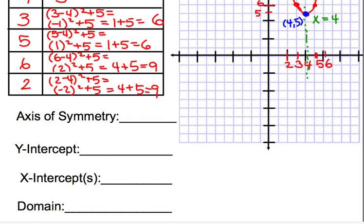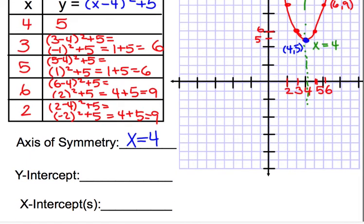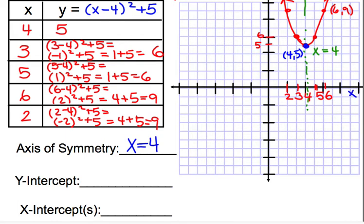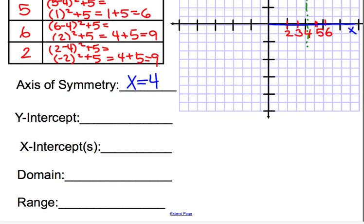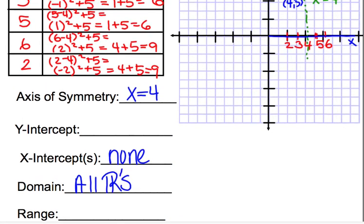Our axis of symmetry is at x equals four. Our y-intercept we'll leave alone for a minute. Our x-intercept, if we look on the x-axis here, it doesn't touch at all. So there isn't an x-intercept. Our domain is what can we plug in for x? So we can plug in all real numbers, or negative infinity to positive infinity.